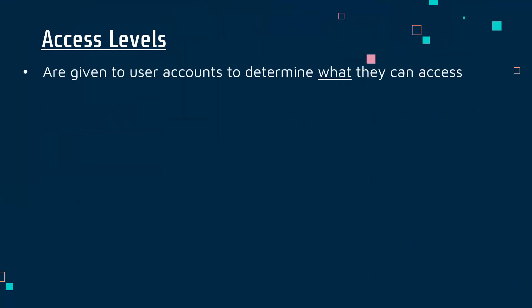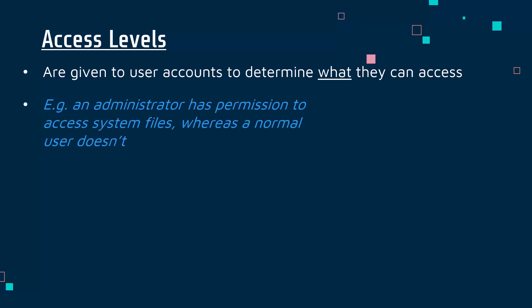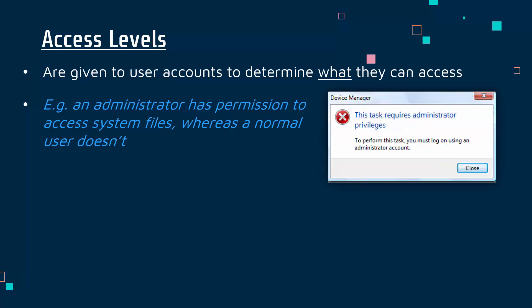Let's talk about access levels. This refers to when we give different user accounts different levels of access. The access level of an account determines what that person is able to access using that account. The best example of this is something you may well have come across — sometimes annoying messages saying you can't do this, you must be an administrator. Certain accounts are administrators with higher privileges than normal users. An administrator is somebody who's trusted and has permission to do certain things which normal users can't, such as accessing system files which are essential to the running of the computer.